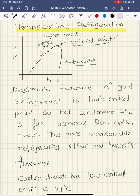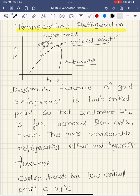Let us understand the transcritical refrigeration cycle by referring to a commonly used refrigerant in the transcritical cycle, which is carbon dioxide. Carbon dioxide, also known as R744, is a natural refrigerant. The interest in the transcritical cycle stems from the use of carbon dioxide. We all know that the commonly used refrigerants are hydrocarbons or hydrocarbon derivatives — HCFCs are nowadays used. All these hydrofluorocarbons and chlorofluorocarbons have the characteristic that their critical point is high.